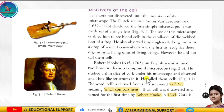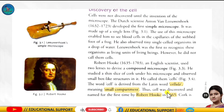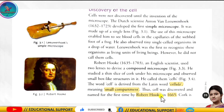Robert Hooke developed a compound microscope and observed small box-like structures in cork — cork is the outer layer of the bark of a tree. He called these box-like structures 'cells.' Thus, cells were discovered and named for the first time by Robert Hooke in 1665. 'Cellula' is a Latin word for cell meaning a small compartment. Note that Robert Hooke had actually observed dead cells.